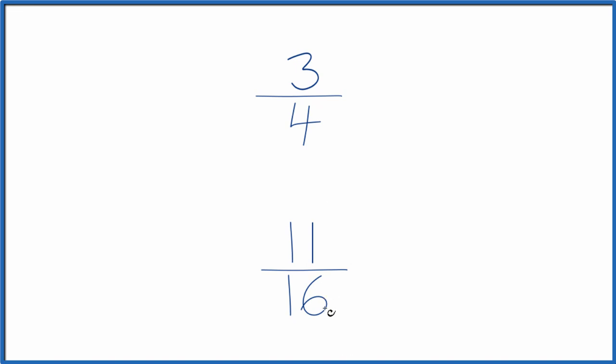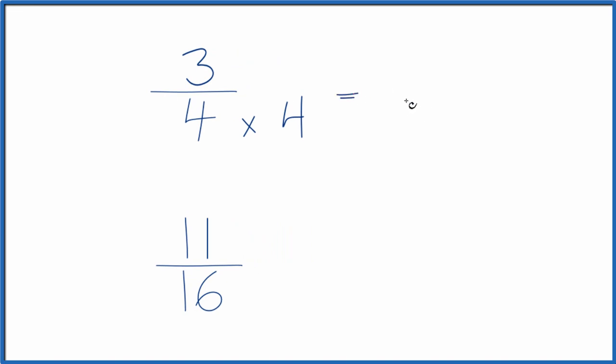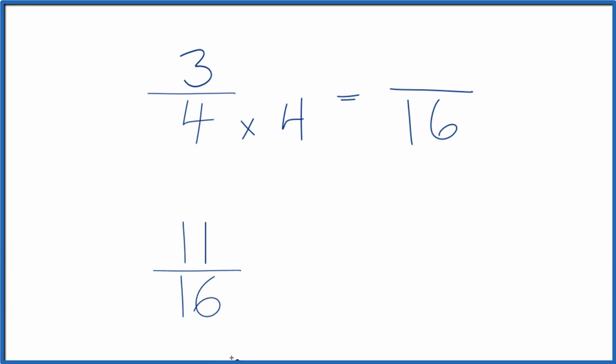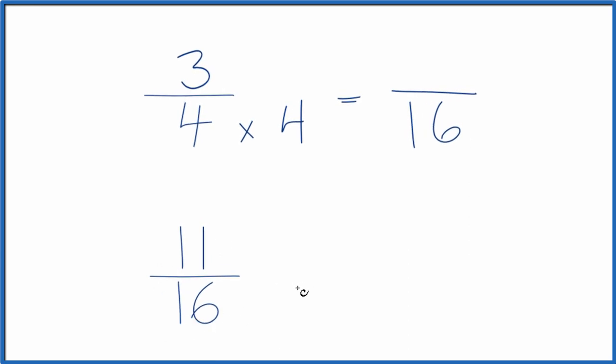To do that, I can see that 4 goes into 16 four times. 4 times 4 equals 16, so we have a denominator of 16 here. With 11/16, we already have 16, so let's just write the same thing—11/16.